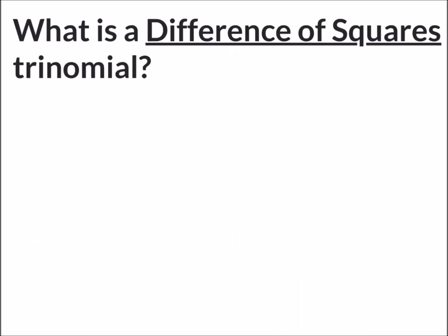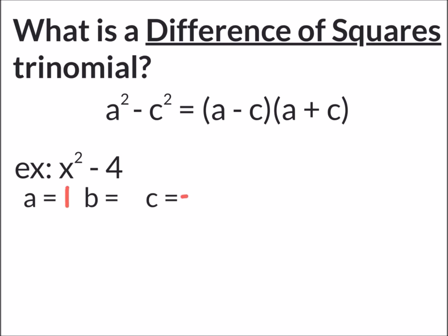There's another type of special polynomial called a difference of squares. So what is a difference of squares trinomial? Well it's something that can be written as a² - c² or an expanded binomial form (a-c)(a+c). Let's go ahead and look at our first example x² - 4. a equals 1, c equals -4 and notice that there's no x term so b is going to equal 0 and that's when we know we're dealing with a difference of squares. When b equals 0.